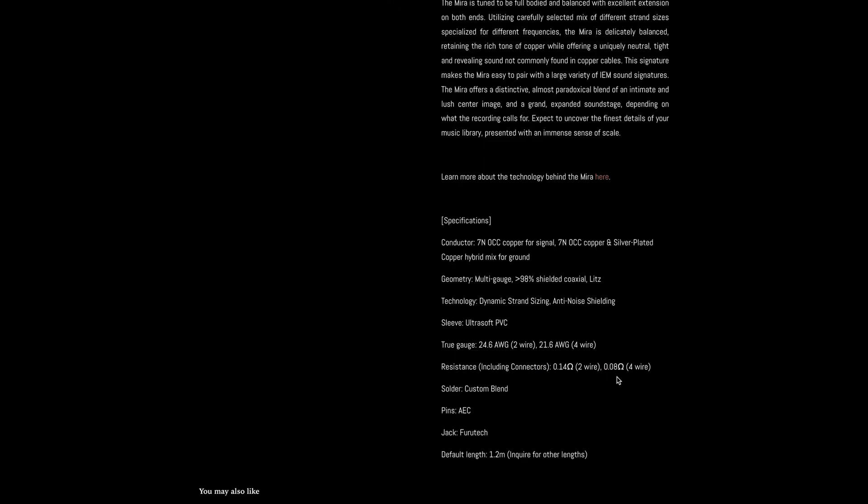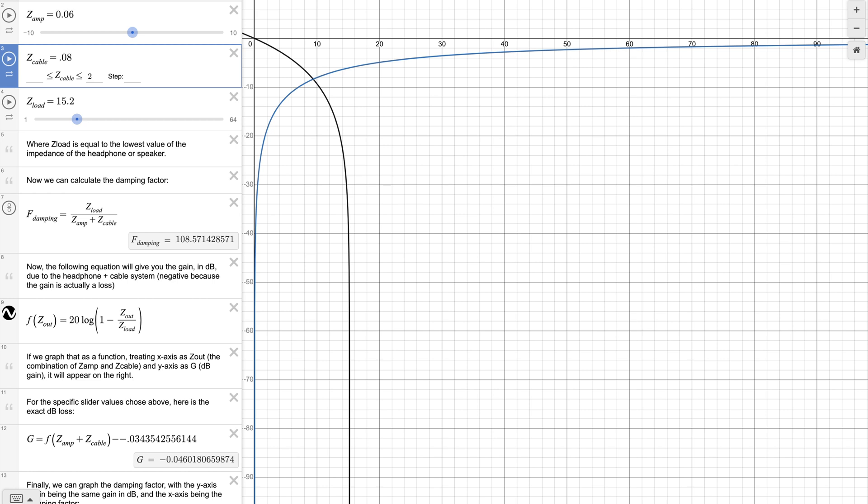In the 4-wire version, we have an impedance of 0.08 ohms. Using the impedance of 0.08 ohms, the SPL drop from the cable is -0.04 dB. The absolute threshold for audibility in an ABX test is 0.1 dB.